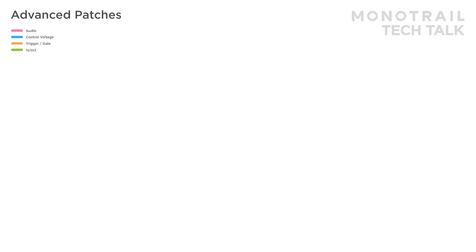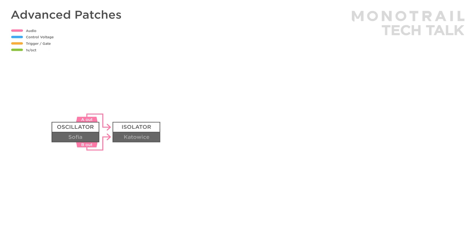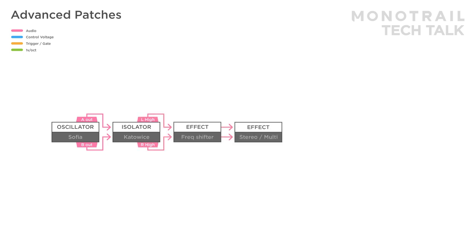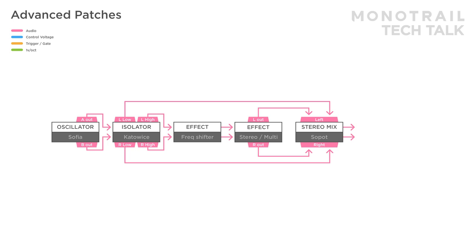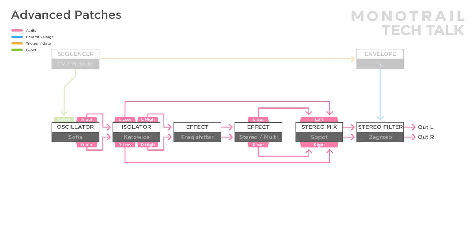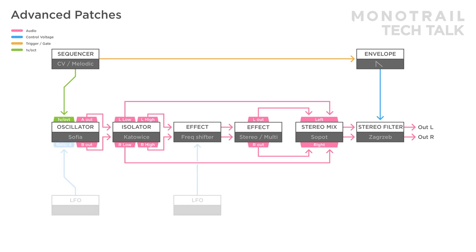Any stereo module can add to the mix, and of course you can push it as far as you like. Here, the ripple elements A and B of complex oscillator Sophia are used to create the stereo field. The audio is sent to the stereo band isolator Katois, and then split up — the stereo high frequencies are sent through a frequency shifter and stereo reverb, and then mixed using a stereo mixer, where they meet the isolated low frequencies. Then the sound is filtered. A sample sequencer with envelope is used, and both the oscillator and frequency shifter receive some modulation from an LFO. In this setup, Zagreb is used as a bandpass filter, which lets you morph from the clean low end to the modulated high end of the sound.